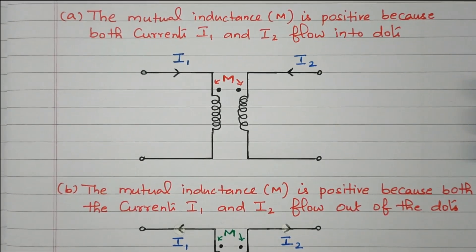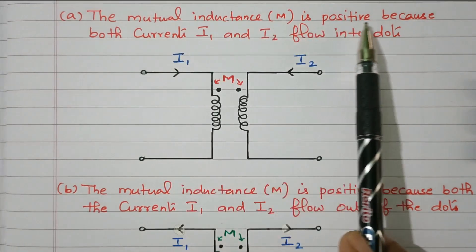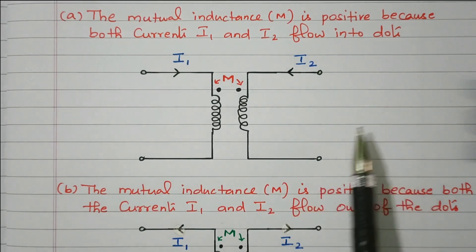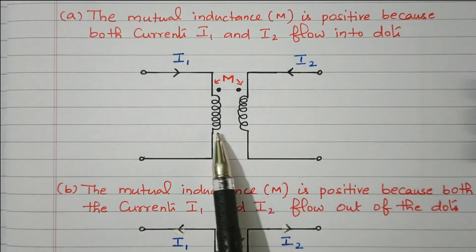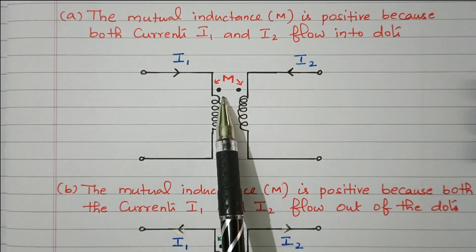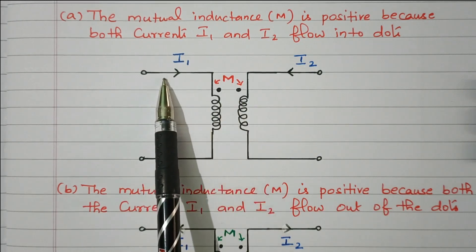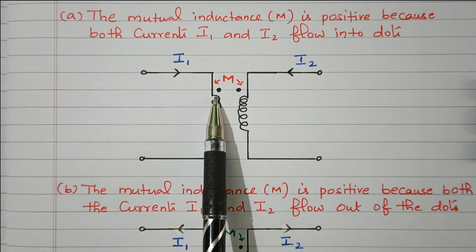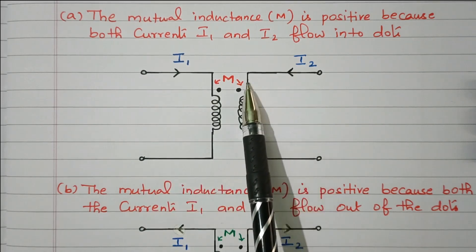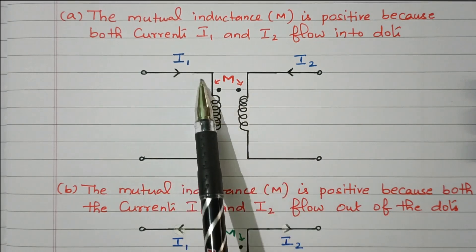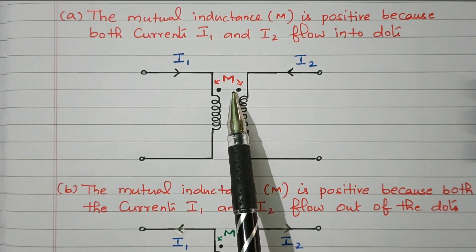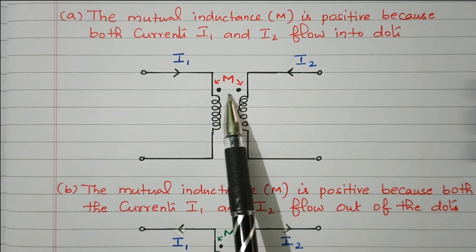The first case: mutual inductance is positive because both currents I1 and I2 flow into the dot. Consider these two inductors L1 and L2, with dots at the upper end. Current I1 in coil one enters the dotted end, and current I2 in the second coil also enters the dotted end. Both currents enter the dotted end, so mutual inductance is positive.